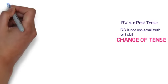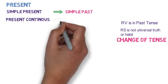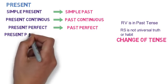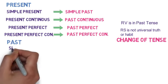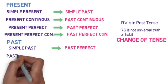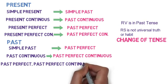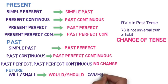The tense changes will happen in the following way. For present tenses: simple present converts to simple past; present continuous converts to past continuous; present perfect converts to past perfect; present perfect continuous converts to past perfect continuous. For past tenses: simple past converts to past perfect; past continuous converts to past perfect continuous; past perfect and past perfect continuous won't change. For future tenses: 'will' or 'shall' will be replaced by 'would' or 'should', and modal verbs 'can' or 'may' will be converted to 'could' or 'might'.